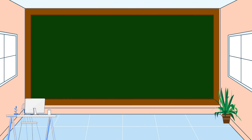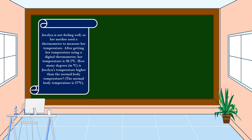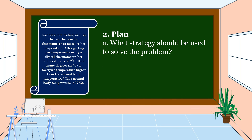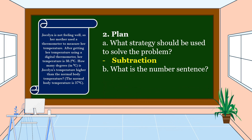We already understand the problem, so the next step is to make a plan. What strategy should be used to solve the problem? We are going to use subtraction. The number sentence is: 38.2 degrees Celsius minus 37 degrees Celsius is equal to N.